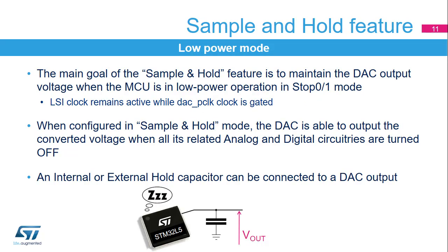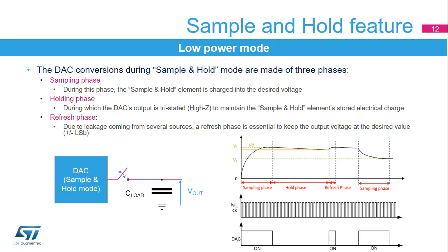The sample and hold feature maintains the DAC output voltage while not actively driving continuously. It relies on an internal or external capacitor that holds the voltage level at the end of the sample period. Then the DAC output can be set in high impedance. The capacitor will discharge over time, which is why a refresh period has been defined. Upon expiration of the refresh period, the DAC output will be actively driven again to recharge the capacitor. The DAC can work intermittently — charge the external or internal capacitor, and be powered down while the output voltage is kept on the hold capacitor. After the refresh period, the DAC is powered back on and recharges the hold capacitor.